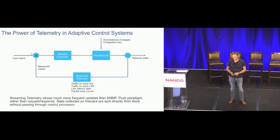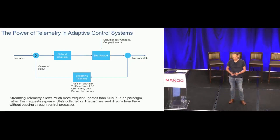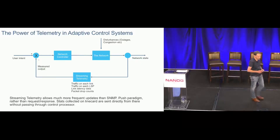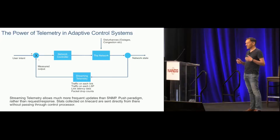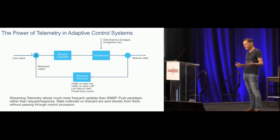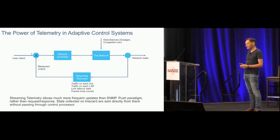This slide is the key one of the entire presentation — it shows a diagram of a closed-loop automation system, familiar from many parts of engineering. The same block diagram style could apply to cruise control on a car or an air conditioning system in a building. Starting on the left-hand side you have user requirements: what does the user want from this network? The network controller performs path computations and installs traffic-engineered paths into the network. But the network is a living creature with outside disturbances — outages, fibre cuts, changing traffic patterns causing congestion. You need a way of measuring the current state of the network.